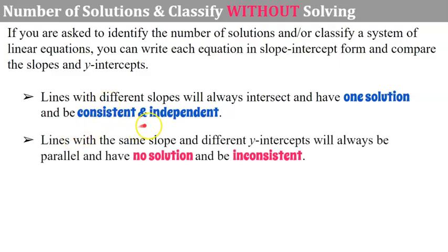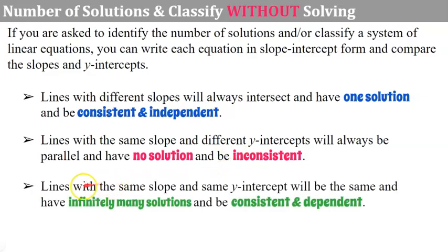If lines have the same slope and different y-intercepts, they will always be parallel — they're different lines parallel to each other, with no solution, so the system is inconsistent. When both equations have the same slope and the same y-intercept, they're the same line, giving infinitely many solutions, and the system is consistent and dependent.